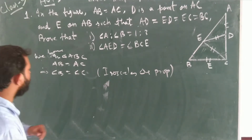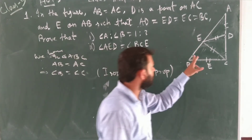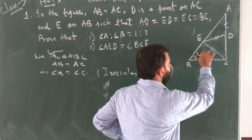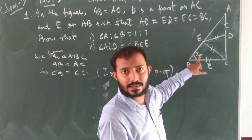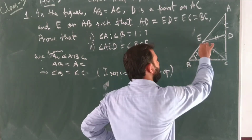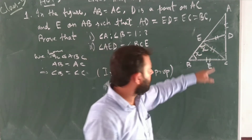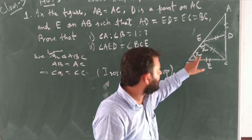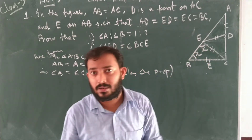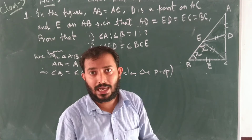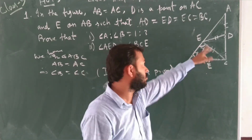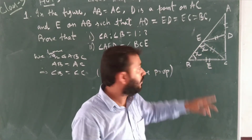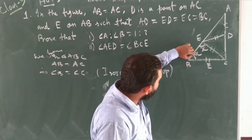Take angle B as X. Because if you look at that triangle, two sides are equal, and if sides are equal their opposite angles must be equal — we apply the isosceles triangle property. That means their corresponding angles must be equal. So angle B goes to X. Our target is to find the ratio A to B, that's why we are labeling these angles.